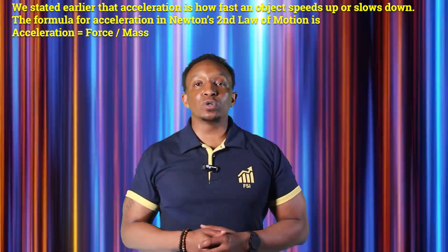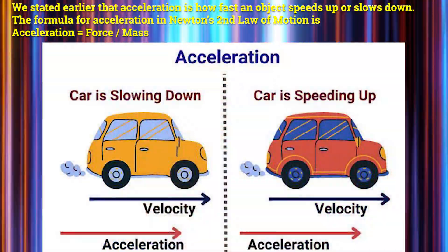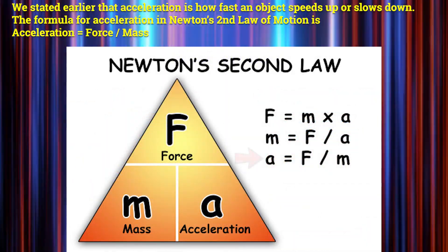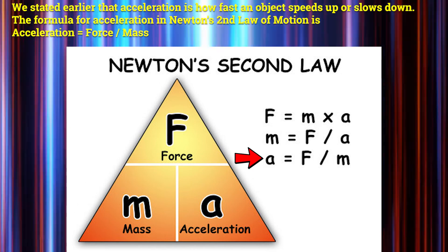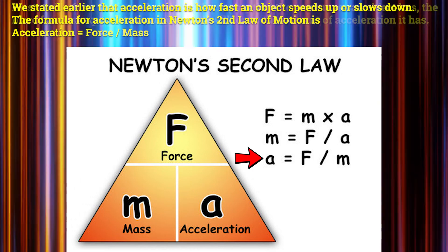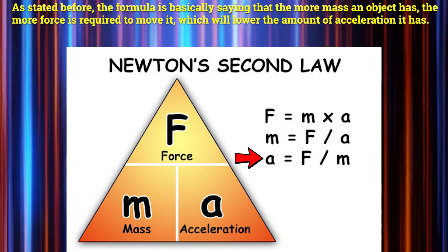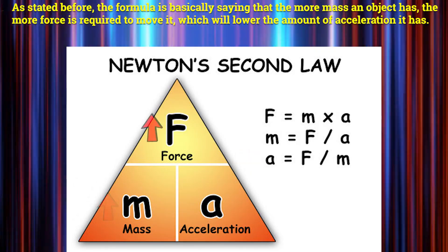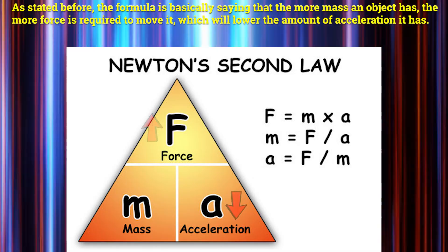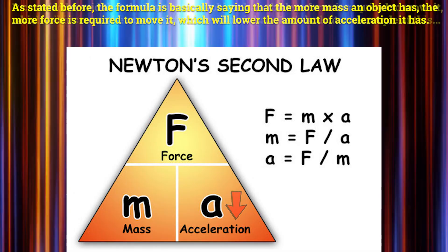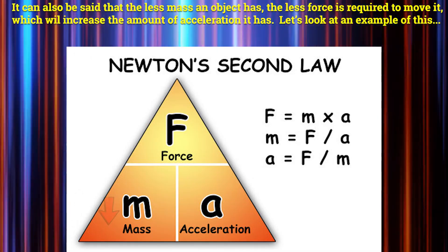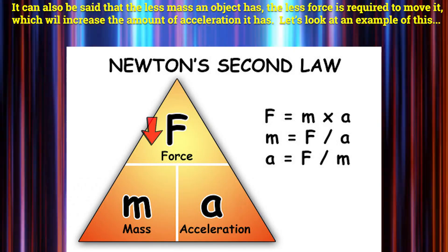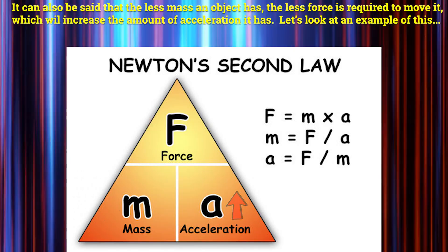Acceleration is how fast an object speeds up or slows down. The formula for acceleration in Newton's second law of motion is acceleration equals force divided by mass. The more mass an object has, the more force is required to move it, which will lower the amount of acceleration it has. The less mass an object has, the less force is required to move it, which will increase the amount of acceleration it has.